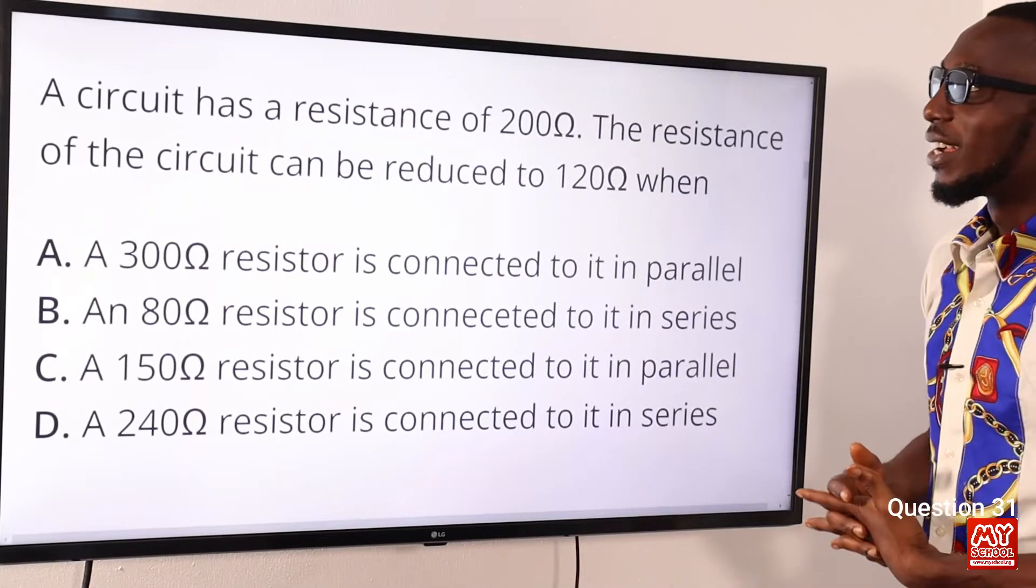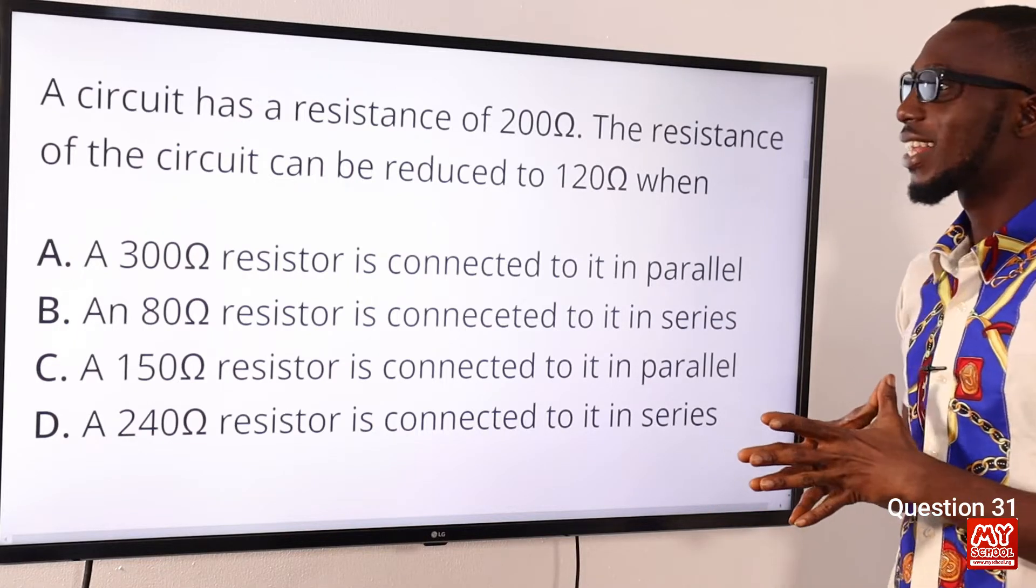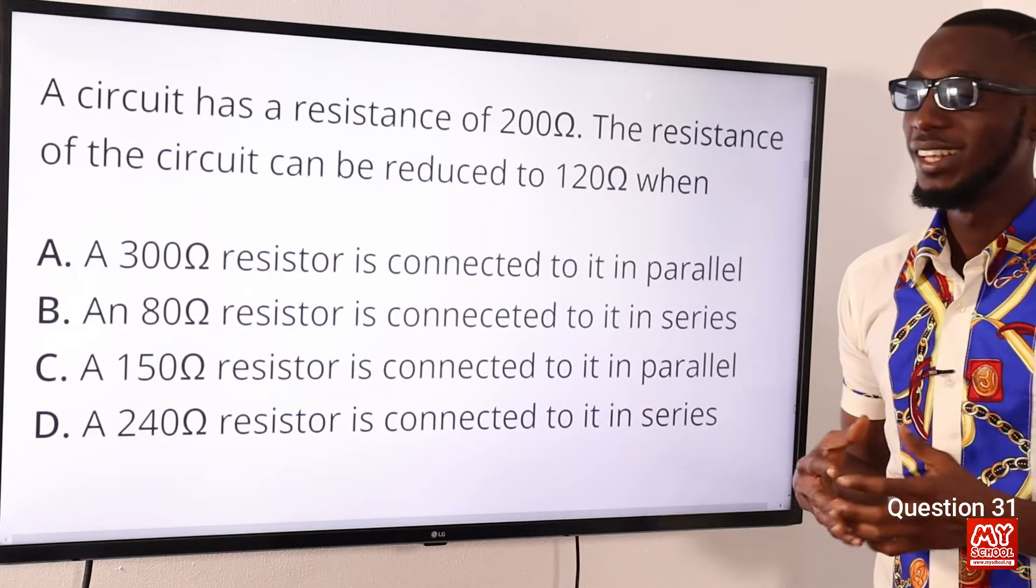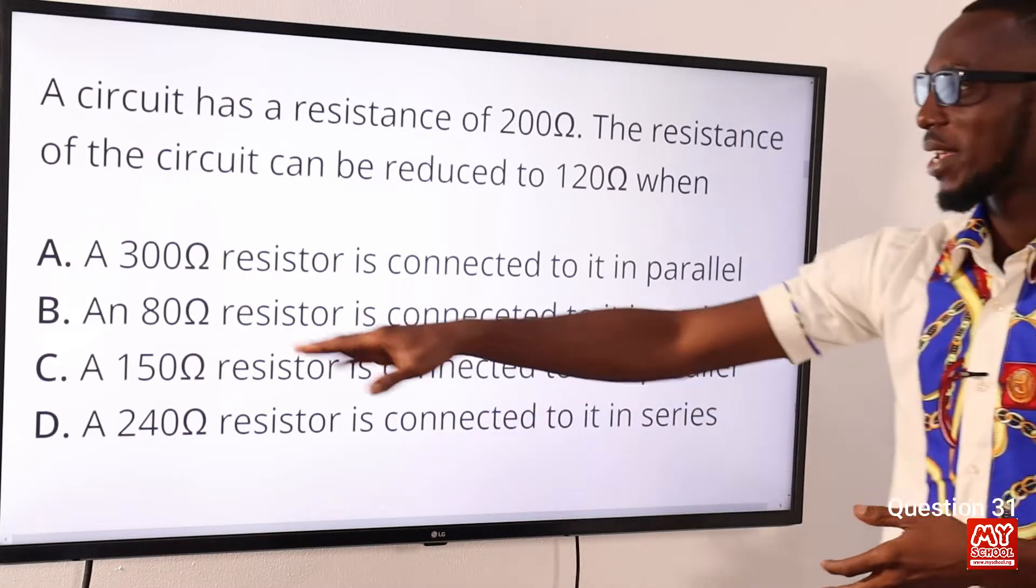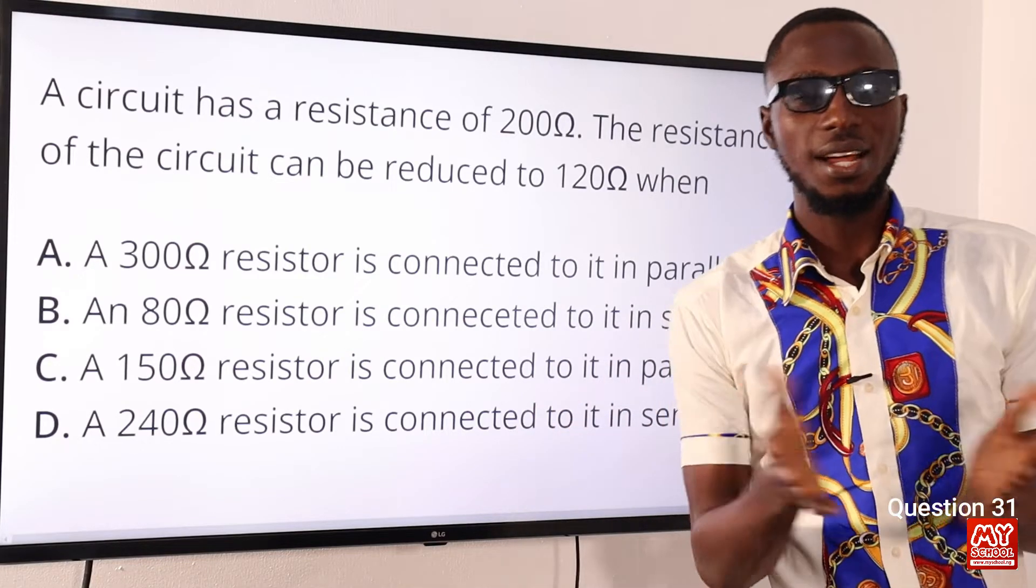Question 31. A circuit has a resistance of 200 ohms. The resistance of the circuit can be reduced to 120 ohms when we add 300 ohms resistor to it in parallel. So, let's try this out.